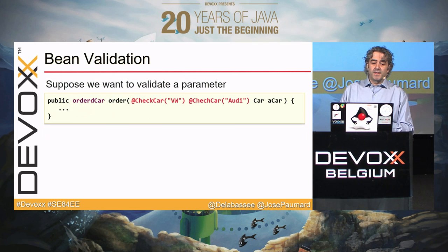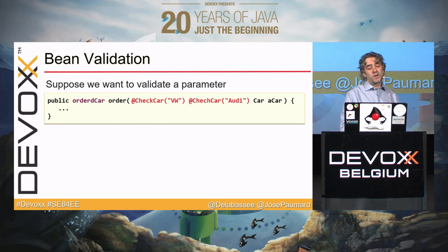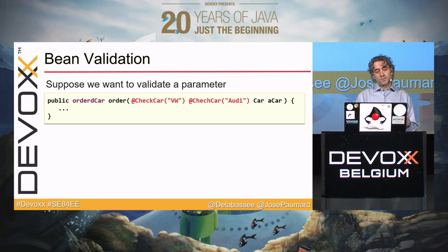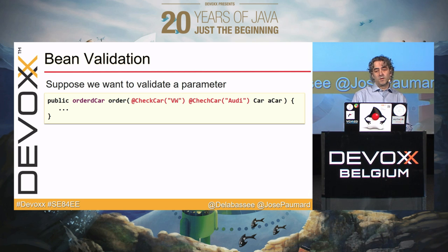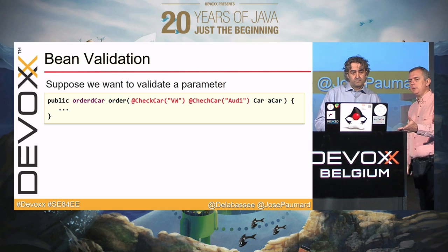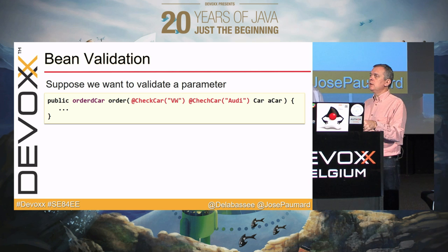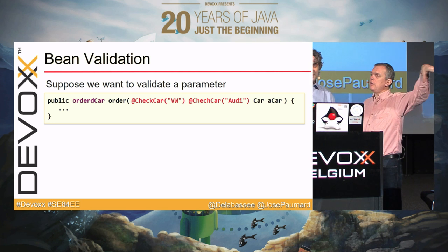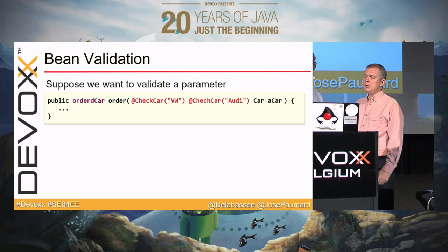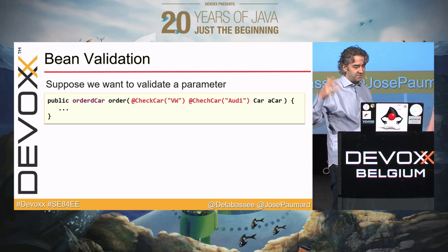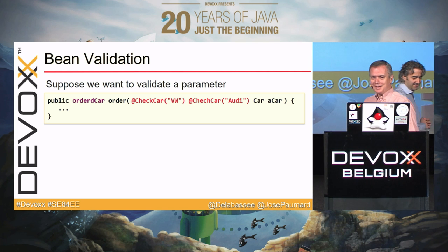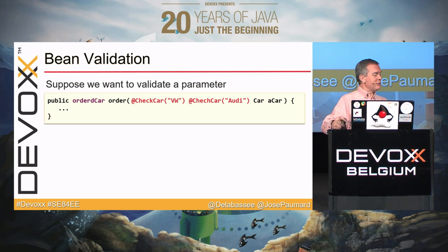Once we have done that, we can use multiple @CheckCar annotations on the same method — for example, checking if the car is a Volkswagen, or an Audi. It can be a Volkswagen, it can be an Audi, a Skoda, a Porsche, and so on. This is using Java EE7 annotation on top of Java SE8, which is nice.